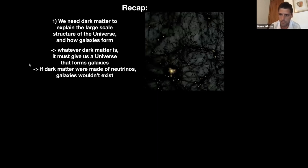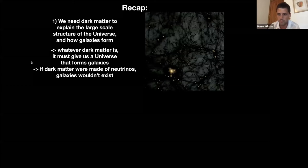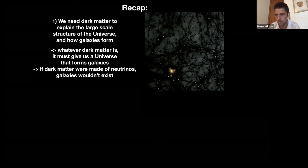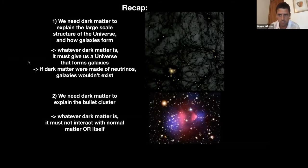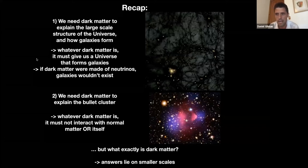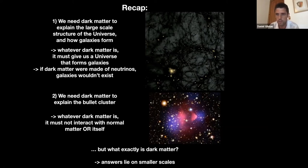To recap: we need dark matter to explain the way the universe looks on large scales, and we can start making statements about what dark matter can be. Whatever it is, it must allow you to have galaxies — if there were no galaxies, we wouldn't be here. You can also say some things about what it can't be. For example, if dark matter were neutrinos, which are part of the standard model of particle physics and have very weak interactions, there would be no galaxies. So we know dark matter can't be neutrinos. You also need to explain observations like the bullet cluster. But this isn't enough — we know dark matter exists and can say some general things, but we want to know what it actually is. If we want to learn more, we need to go to smaller scales.